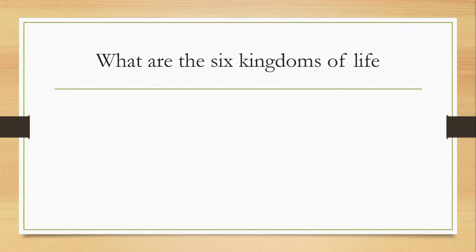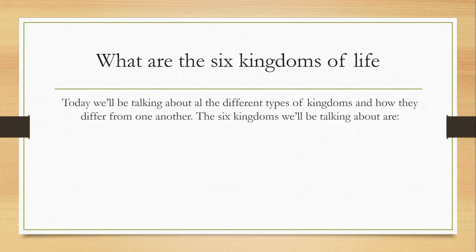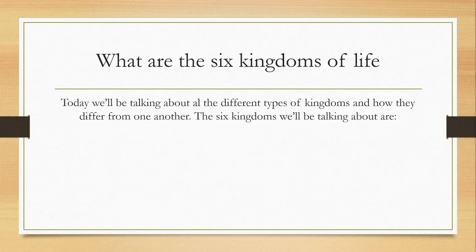What are the six kingdoms of life? All life on earth is classified into six kingdoms. These kingdoms classify life based on cell structure, how they act, whether they eat or use photosynthesis, whether they are uni- or multicellular, and other characteristics. Today we'll be taking a look at all the different types of kingdoms and how they're different from one another.